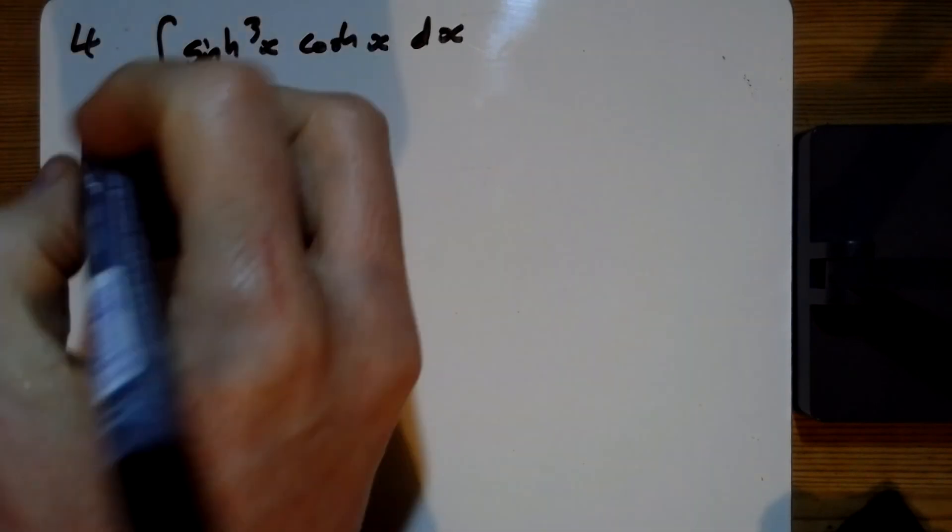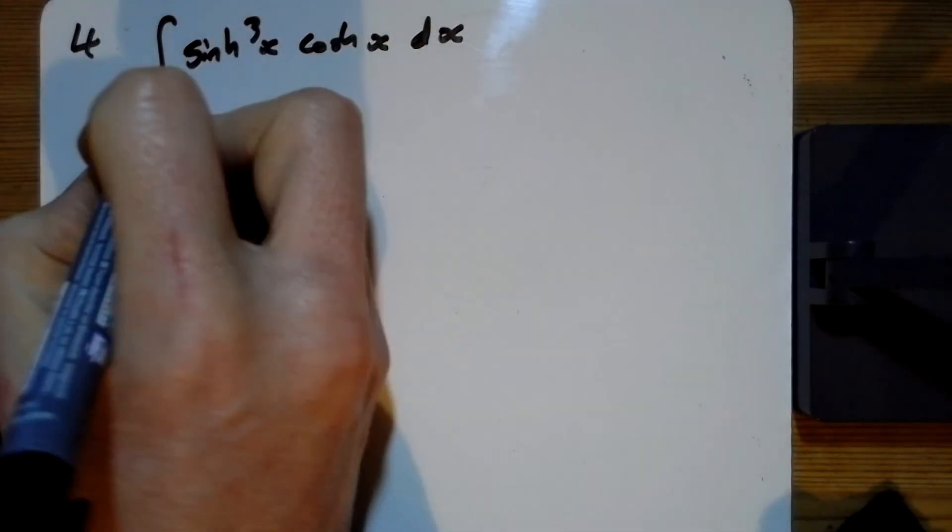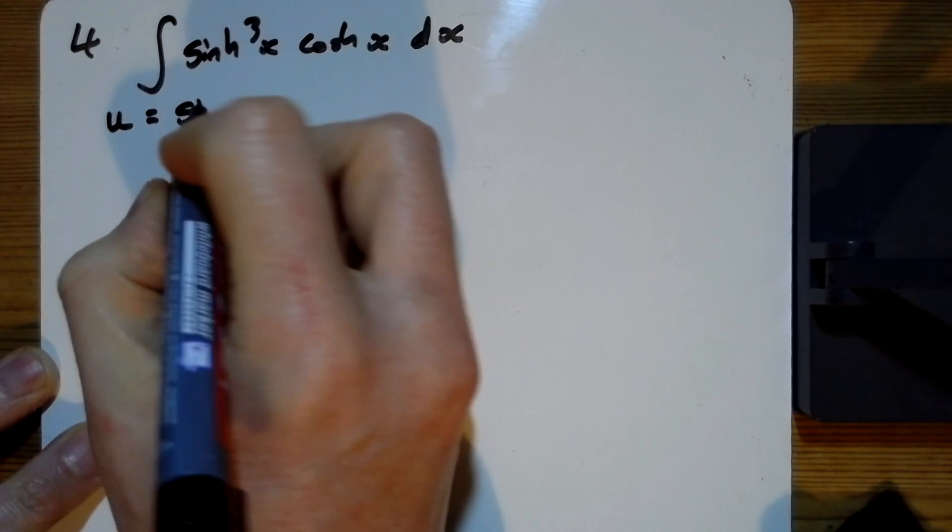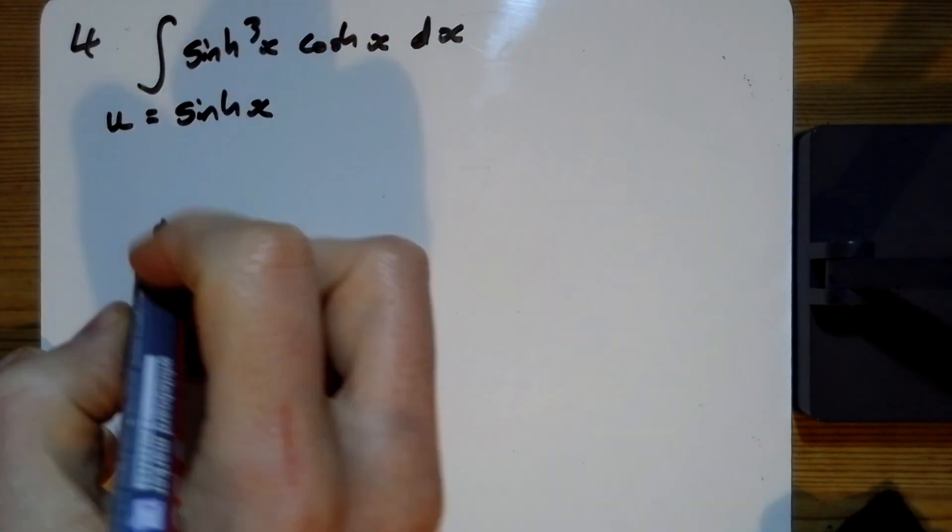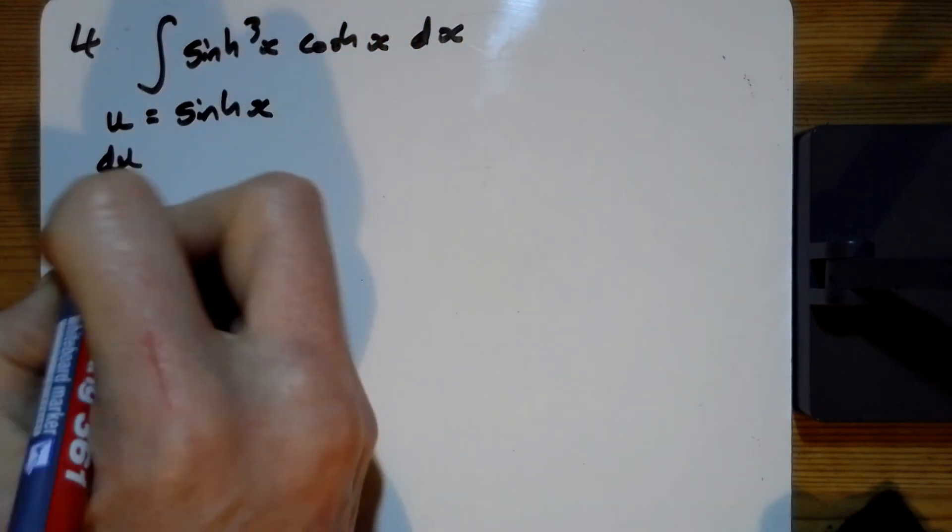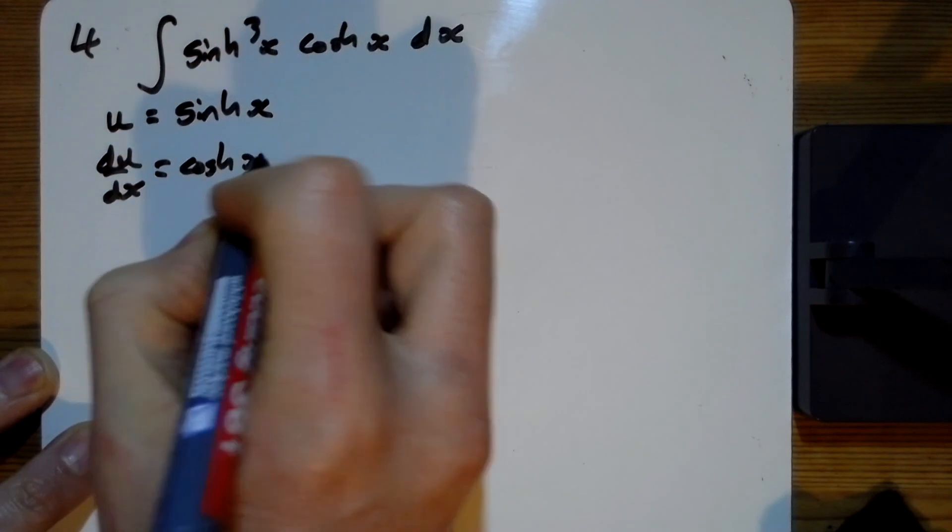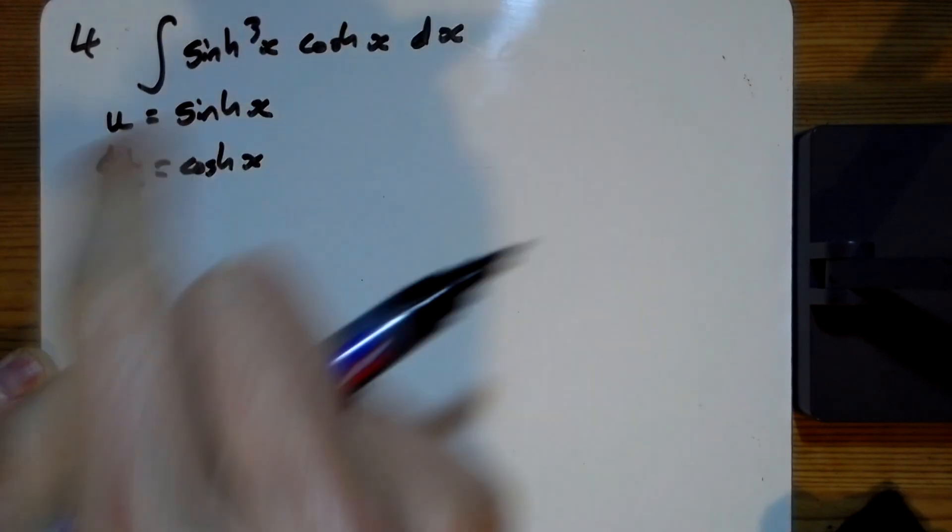So question four, we've got three more substitution ones to do. I'm going to let u equal sinh x, and so when we differentiate that, we get cosh x. And I can see that that's going to cancel with this in a minute.